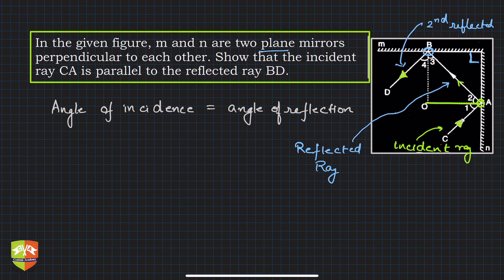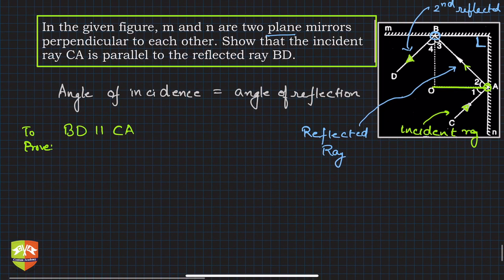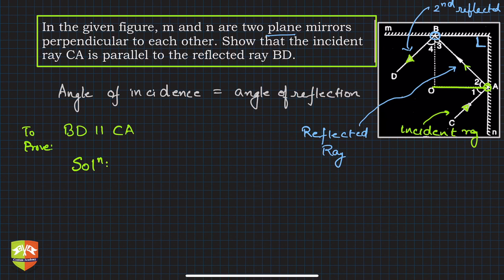To prove this, we obviously have to use the concepts of lines and angles and angle-sum property of a triangle. For two lines to be parallel, we need to prove corresponding angles equal, alternate angles equal, or co-interior angles supplementary.